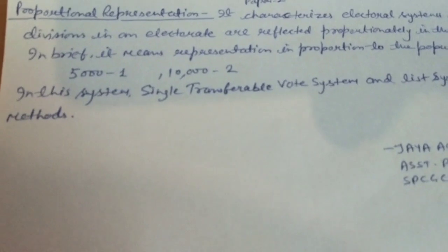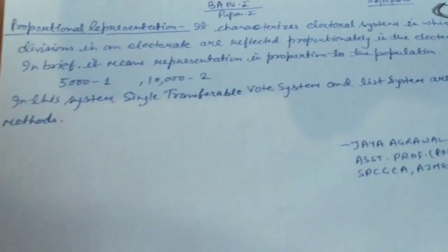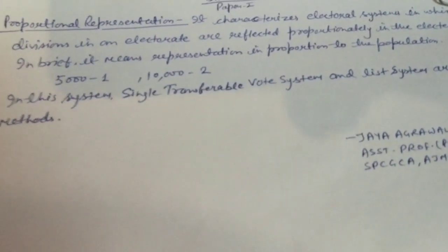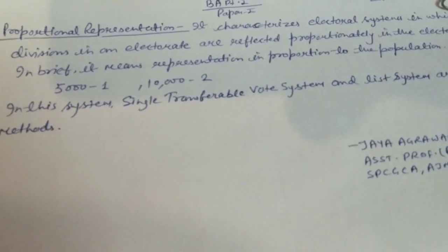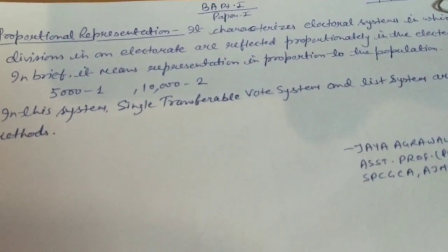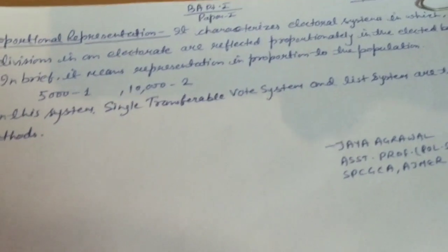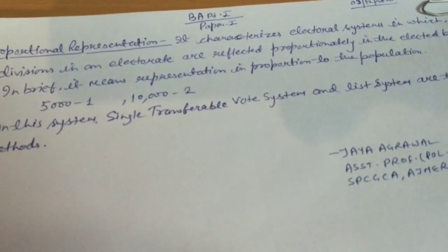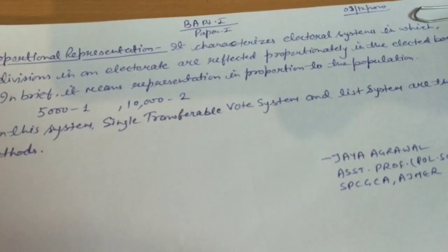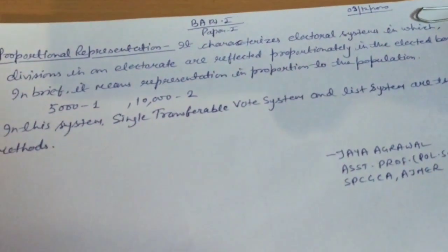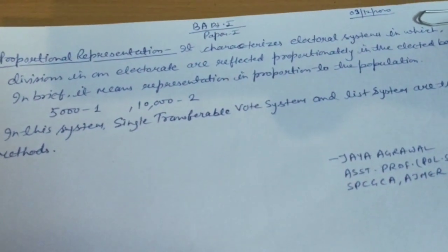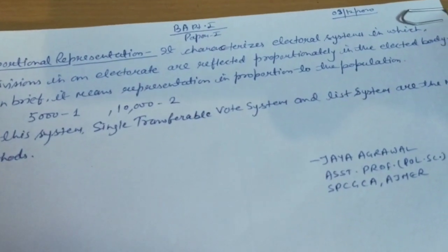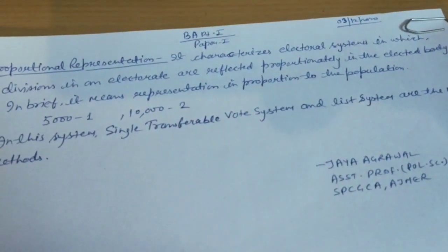The next method is the List System. According to it, the entire country is divided into large constituencies, and sometimes the entire country is considered as one constituency. All candidates are grouped in a list according to their party levels, and every party offers a list of candidates up to the number of seats to be filled for each constituency. The number of votes secured by individual candidates are considered as votes for the list.